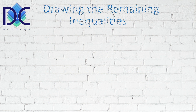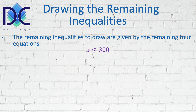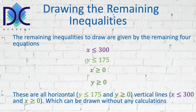For the remaining inequalities: x ≤ 300 is a vertical line through x = 300; y ≤ 175 is a horizontal line through y = 175; and the two non-negativity conditions lie on the two axes — y ≥ 0 is horizontal and x ≥ 0 is vertical. It is clear that we don't need to calculate intercepts for these lines.